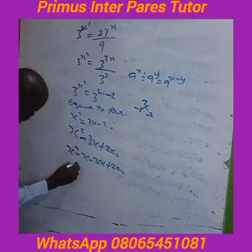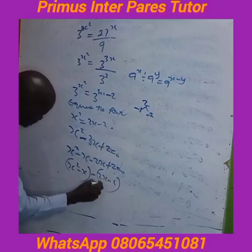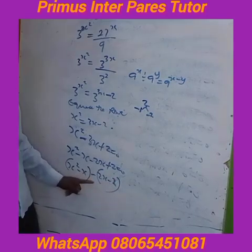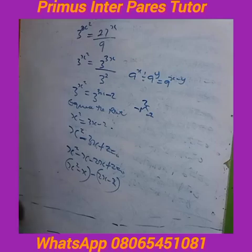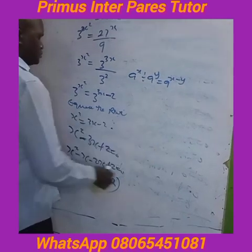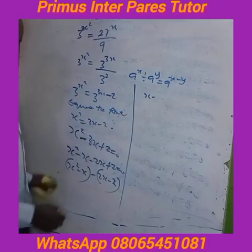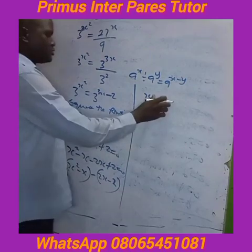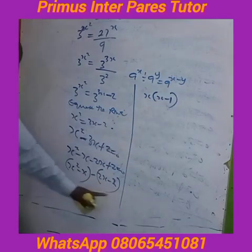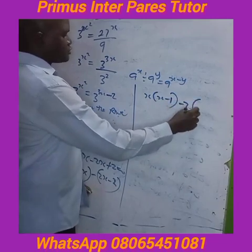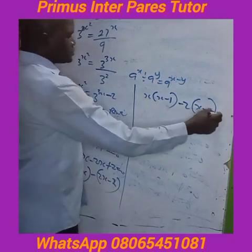Then you have s squared minus x in brackets, and 2s minus 2 in brackets. From here, what is common is x, so you have x into bracket x minus 1. What is common in the second group is 2, so you have 2 times x minus 1, equal to zero.